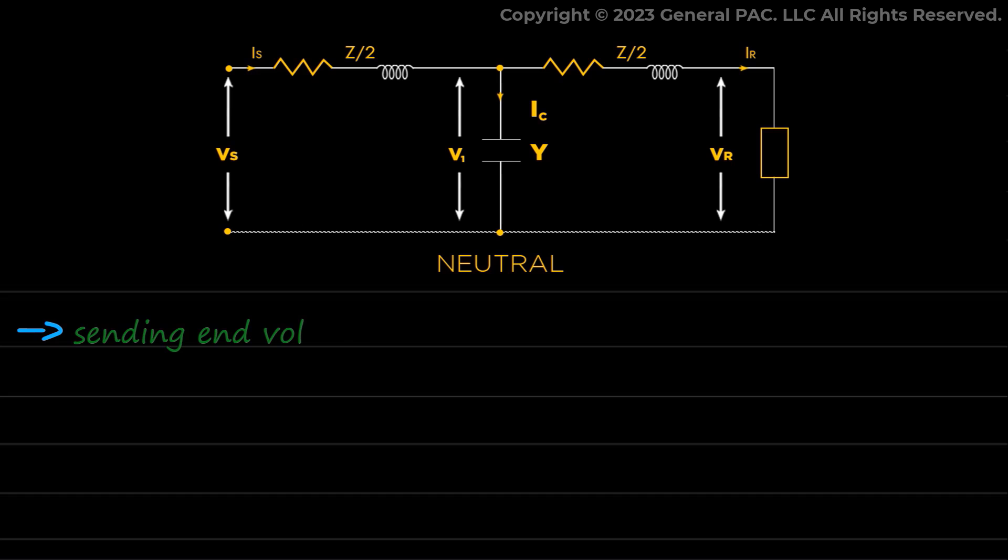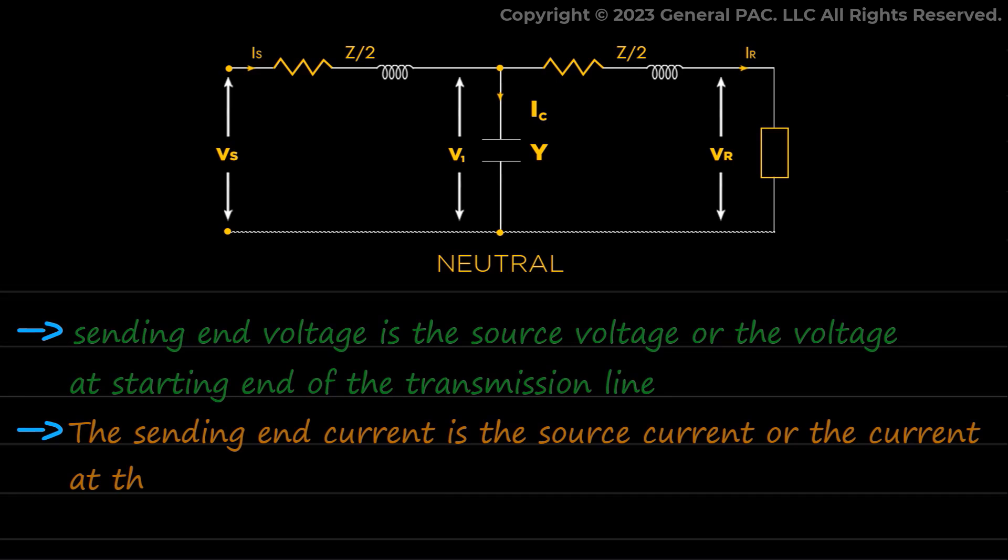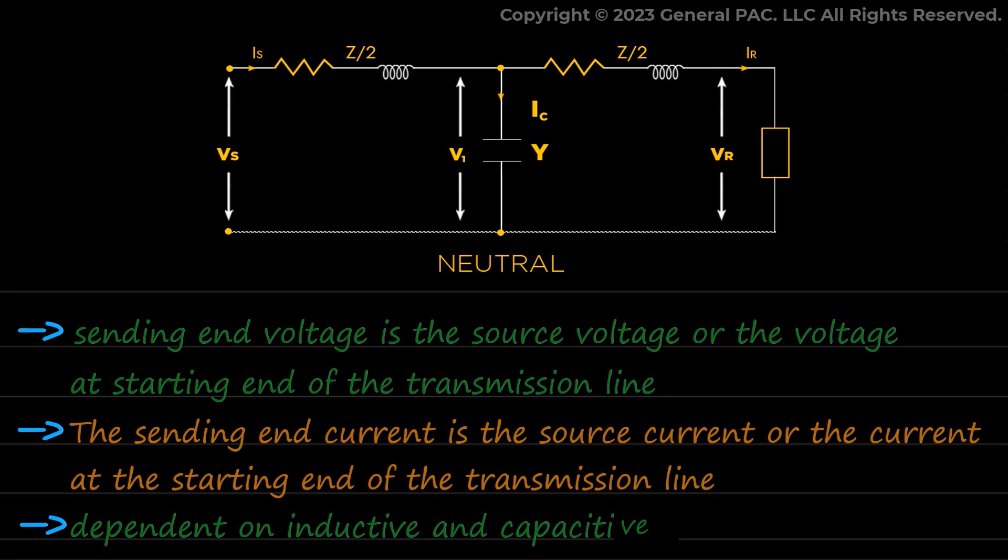The sending end voltage is the source voltage or the voltage at starting end of the transmission line, and the sending end current is the source current or the current at the starting end of the transmission line. Both of these are largely dependent on inductive and capacitive reactance of the transmission line.